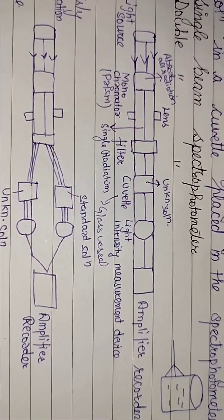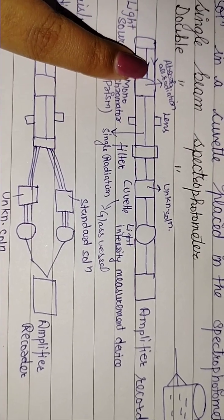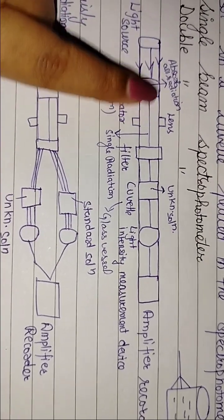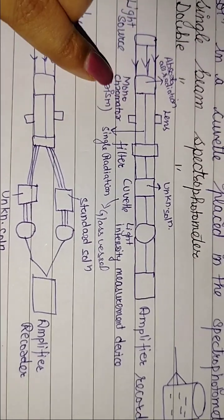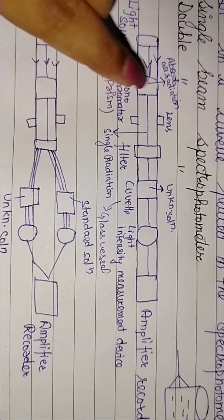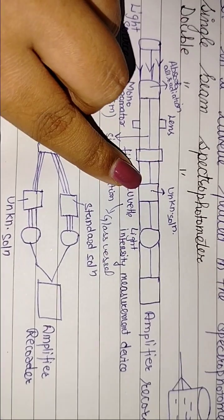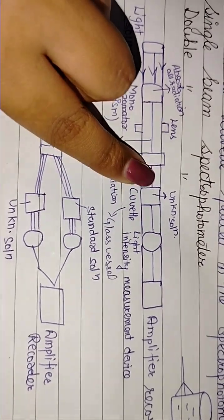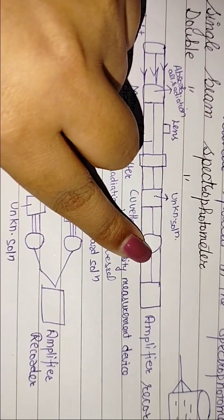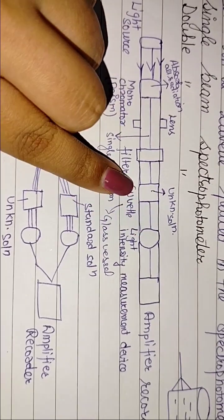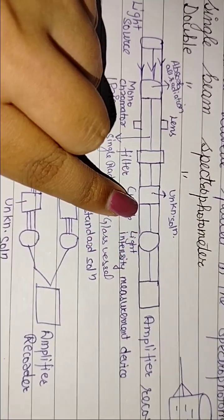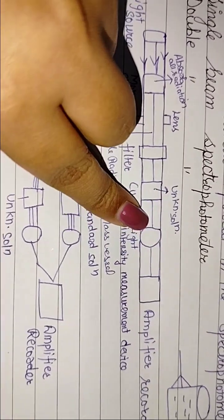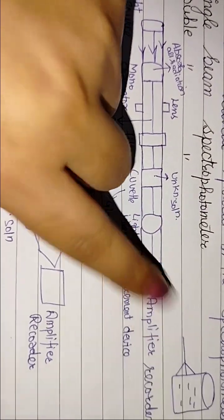It will be unknown solution. Now it has different light source. We have prism as a monochromator. What is a prism? Single beam. It is absorbed by the cuvet. Now it will absorb the measurement device and detector. We will detect the light intensity of the wavelength and the recorder will record it.